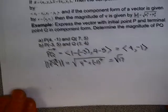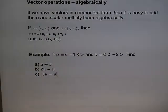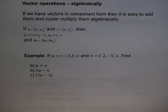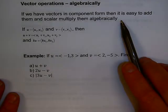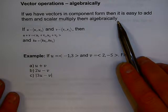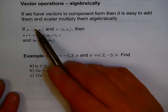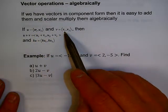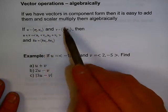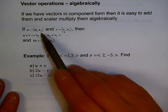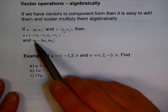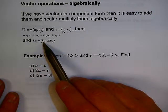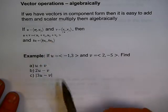Let's talk about adding and subtracting vectors. If you have them in component form, it's easy to add them and scale or multiply them algebraically. If u = ⟨u₁, u₂⟩ and v = ⟨v₁, v₂⟩, then the sum is just adding the x-coordinates and adding the y-coordinates. And a scalar multiple k times u just multiplies each component by k.